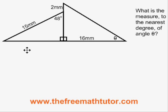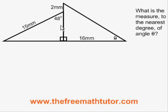In that triangle, we have the 48-degree angle and the 15-millimeter hypotenuse, and we can solve for the remaining angles and sides. The one that interests us is this side here that is adjacent to the 48-degree angle, because that side is partially shared by the triangle on the right.